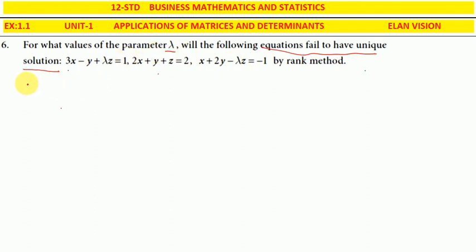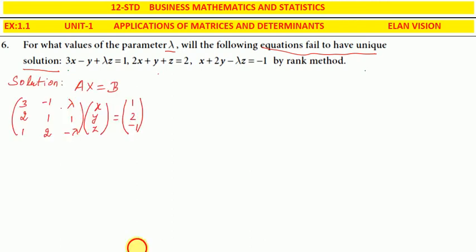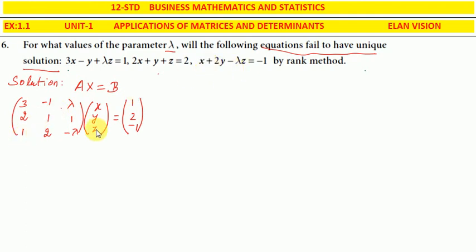Solution: using AX = B formula, A is the coefficient matrix. First equation: x coefficient 3, y coefficient -1, z coefficient lambda. Second equation: x coefficient 2, y coefficient 1, z coefficient 1. Third equation: x coefficient 1, y coefficient 2, z coefficient -lambda.